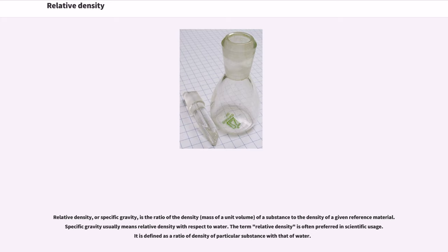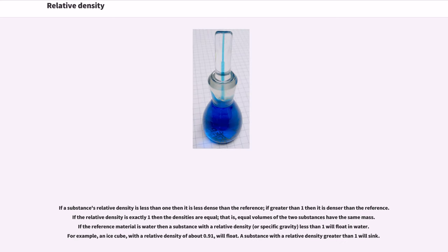Relative density, or specific gravity, is the ratio of the density of a substance to the density of a given reference material. Specific gravity usually means relative density with respect to water. The term relative density is often preferred in scientific usage. It is defined as a ratio of the density of a particular substance with that of water. If a substance's relative density is less than one then it is less dense than the reference; if greater than one then it is denser than the reference; if exactly one then the densities are equal, meaning equal volumes of the two substances have the same mass.